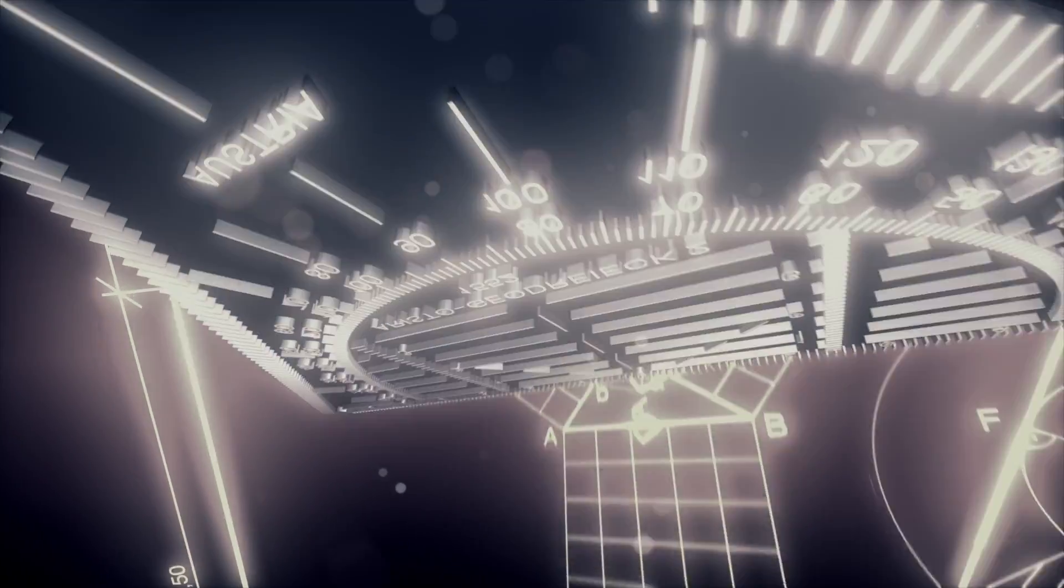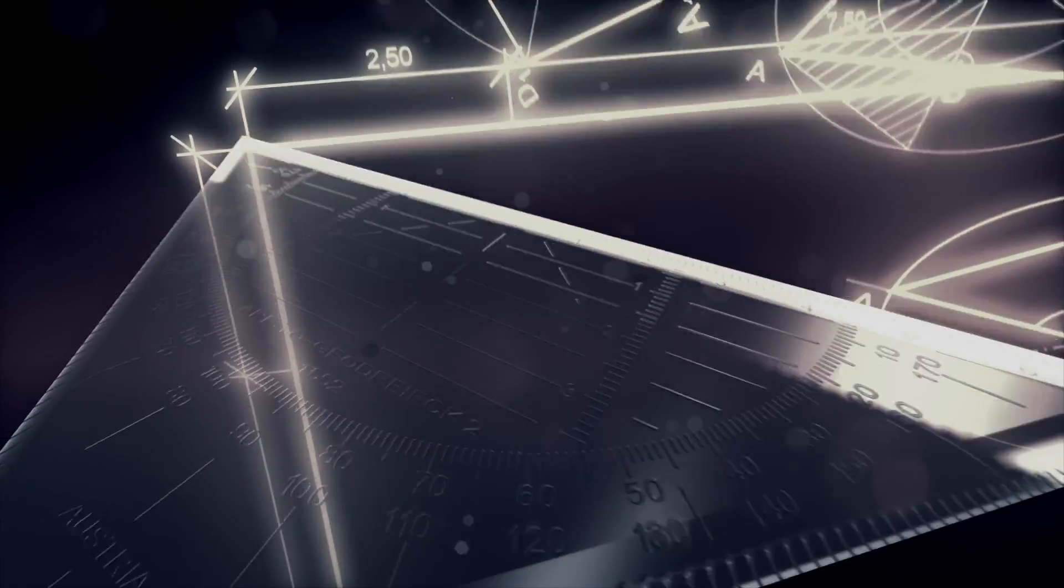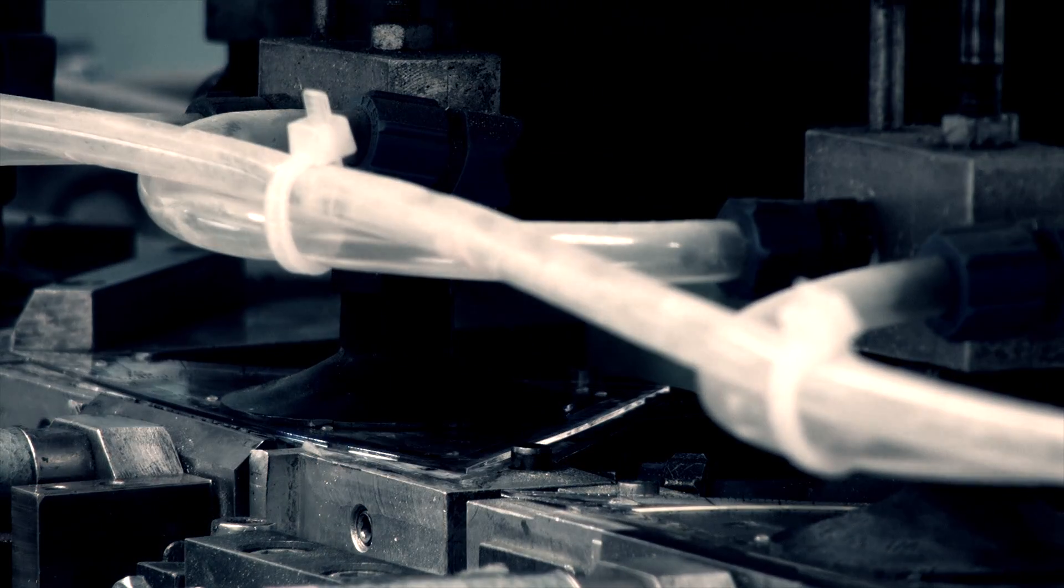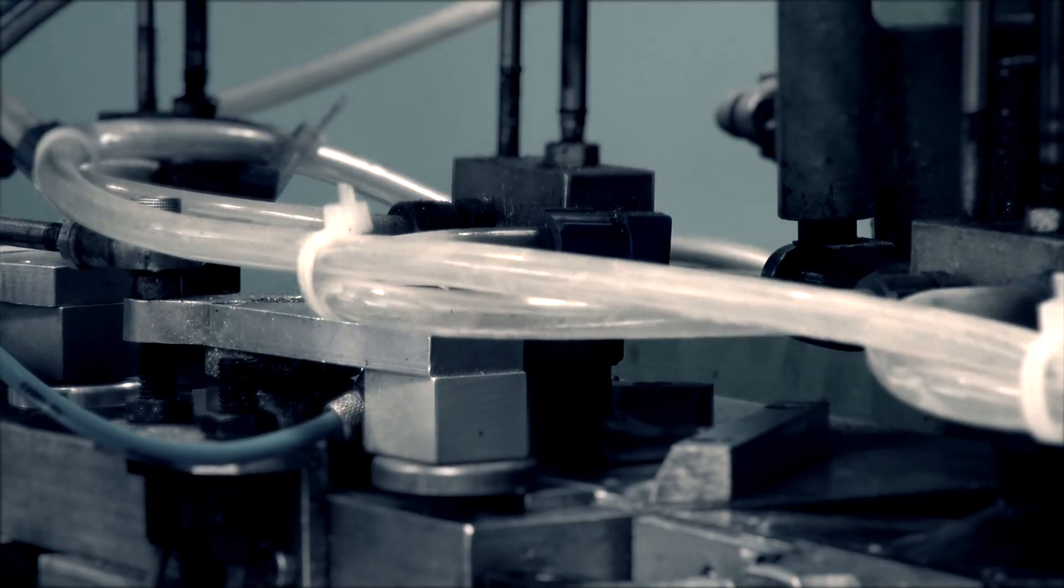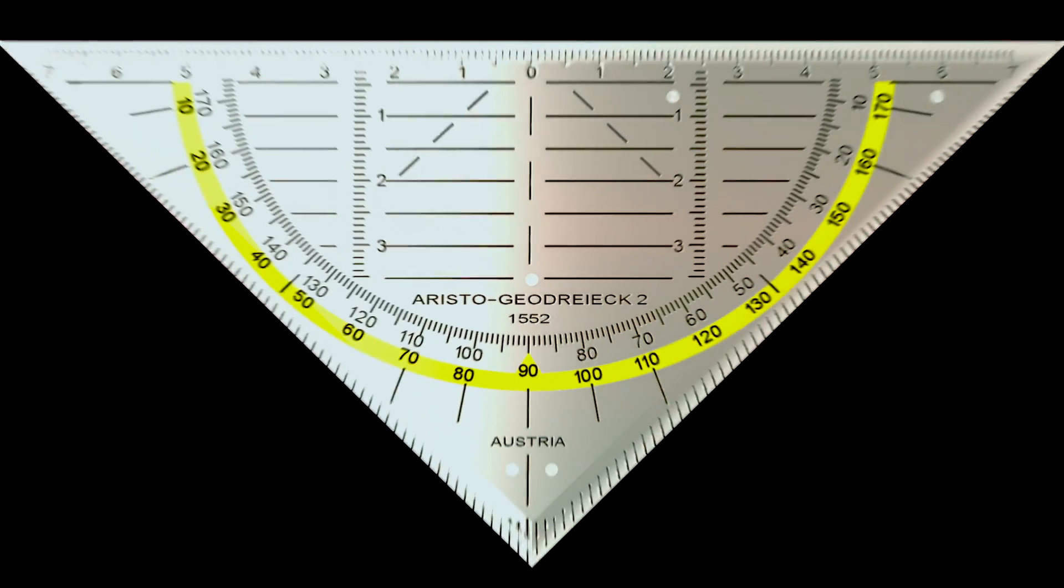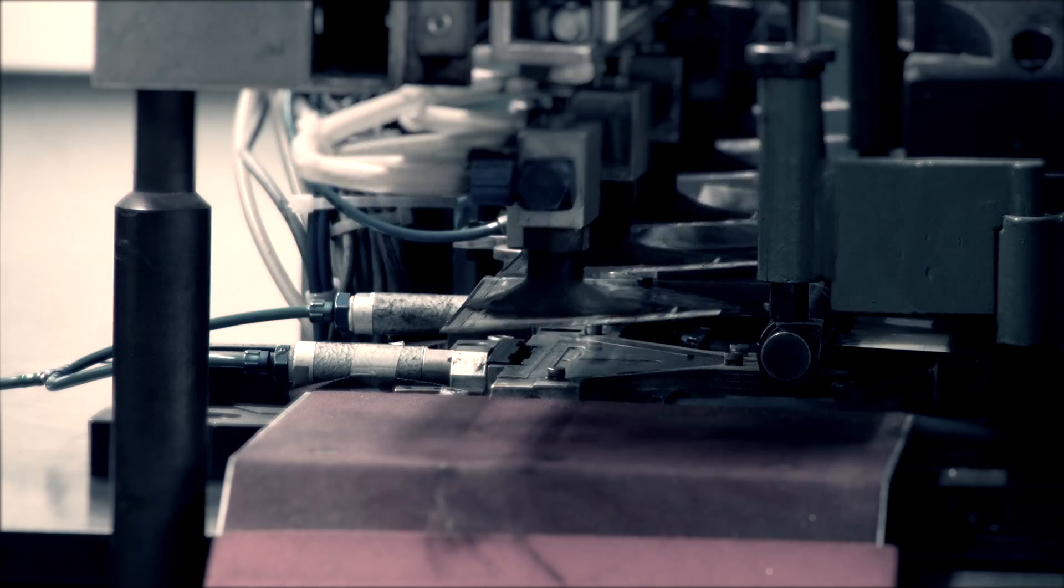Contrary to the surface print method, the specialized hot stamp procedure makes the Geodreieck scales almost indestructible. In this process, the black partitioning and the typical yellow semi-circle are stamped directly into the material.